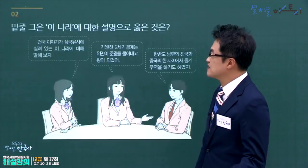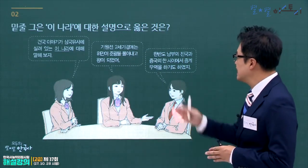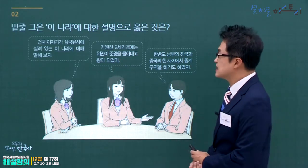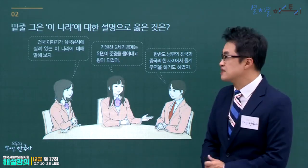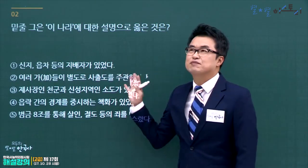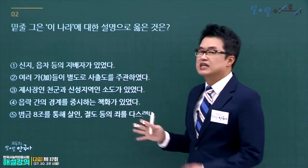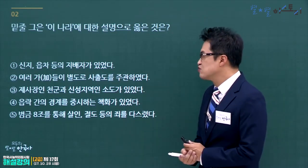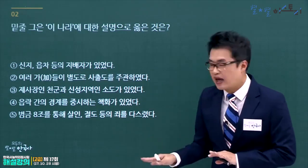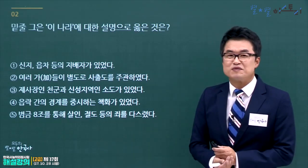2번 문제, 위만이 준왕을 몰아내고 진국과 중국의 한 사이에서 중계무역을 했다는 내용에서 이 나라는 위만조선, 즉 고조선임을 알 수 있습니다. 고조선에 대한 설명으로 옳은 것을 고릅니다. 신지·견지·읍차·부례는 삼한, 여러 가들이 사출도는 부여, 천군과 소도는 삼한, 책화는 동예, 범금 8조는 고조선입니다. 정답은 5번, 범금 8조입니다.